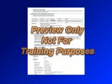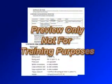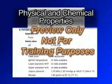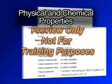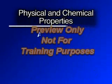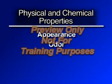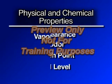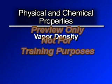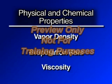Section 9: Physical and Chemical Properties. Lists the chemical's different characteristics, such as appearance, odor, flashpoint, pH level, vapor density, evaporation rate, and viscosity.